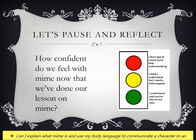Our final short activity today is revisiting the traffic lights for the last time. Think about where you were at the start of the lesson — maybe on red or amber — and think about which colour your understanding is on now after doing the different activities on mime. If you've learned lots more today, it might be that you've gone from amber to green, or from red to amber. If you were already on green, think about how you've tried to achieve the challenge tasks to push your skills in this drama lesson.